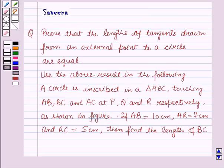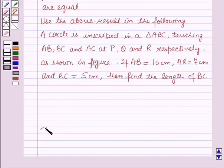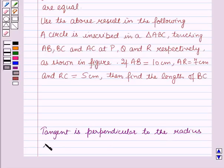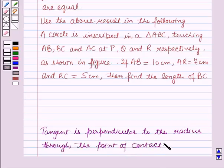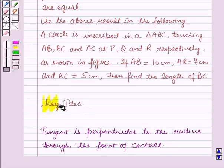Now before starting the solution of this question we should know our key idea, and that is: the tangent is perpendicular to the radius through the point of contact. This result will work out as a key idea for solving out.